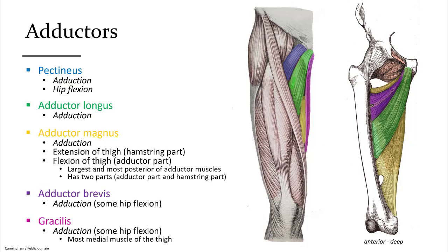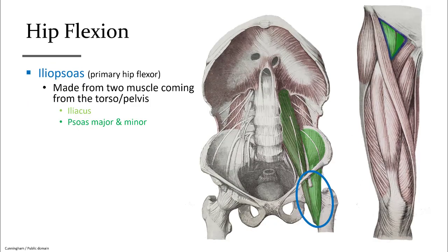Moving the thigh inward toward the midline is adduction. The group of muscles that performs this motion includes pectineus in blue, adductor longus in green, adductor magnus in yellow, and adductor brevis, which is hidden under pectineus in superficial views. The most medial muscle in pink is gracilis. The iliopsoas muscle begins as two muscles: the psoas, originating from the lumbar vertebrae, and the iliacus, from within the ilium. These merge to form the iliopsoas, the prime mover in hip flexion, lifting the thigh up.